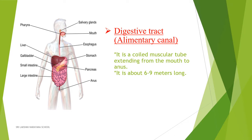The digestive system is divided into two parts: the digestive tract and the digestive gland. The digestive tract is also called the alimentary canal. It is a coiled muscular tube that starts from the mouth and ends at the anus. It is about six to nine meters long. Now let us see the parts of the digestive tract.